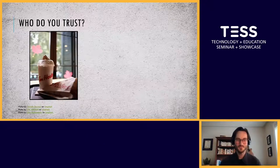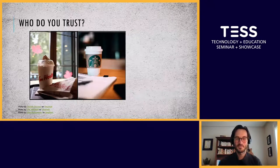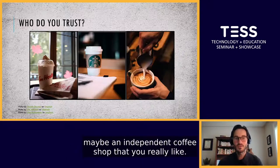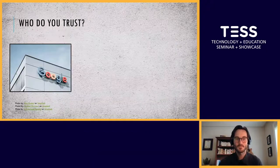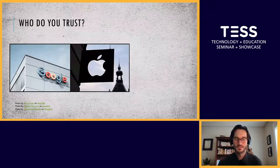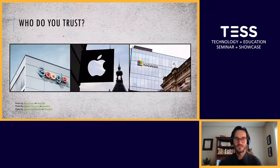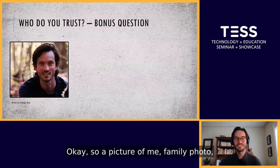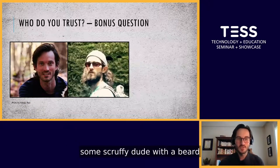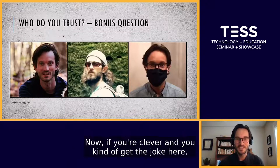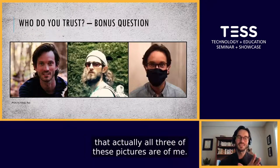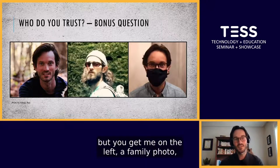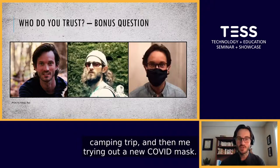So who do you trust? That third image represents maybe an independent coffee shop that you really like. So here we go — last one, kind of a bonus question. A picture of me, a family photo, some scruffy dude with a beard, or a gentleman with a COVID mask. If you're clever and get the joke, actually all three of these pictures are of me. You get me on the left, a family photo from a camping trip, and then me trying out a new COVID mask.